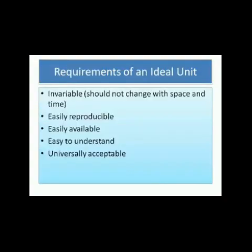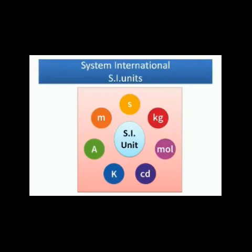An ideal unit must satisfy some criteria. The unit should be invariable — its magnitude should not change with time and place, and should be the same anywhere across the universe. Second, it must be easily reproducible so that its copies can be made. Third, it should be easily available at any place. It must be easy to understand and universally acceptable. Use of different systems of units became very inconvenient for exchanging scientific information, so System International units, i.e. SI units, was accepted.